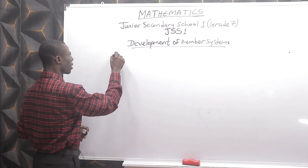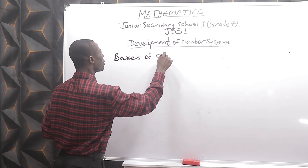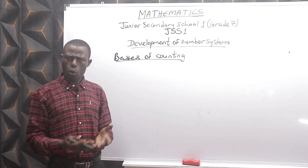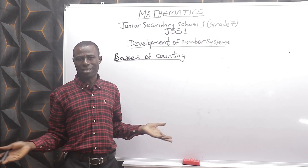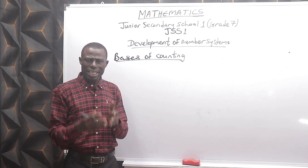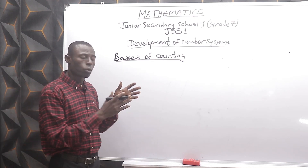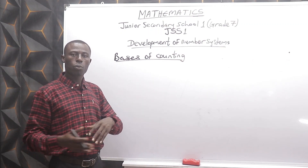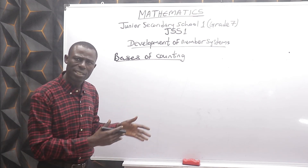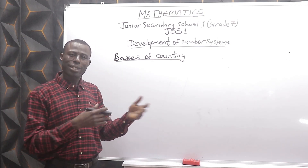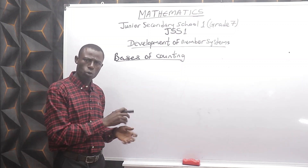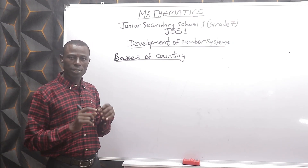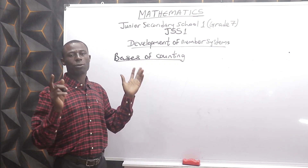Let's start with basis of counting. On the basis of counting, we can count numbers in different bases — meaning we group numbers in different capacities. We group in twos — when we group numbers in twos we say we are using base 2. We also group numbers in fives, in tens, in sevens, in 24s, 60s, and so forth.